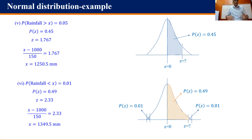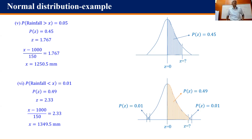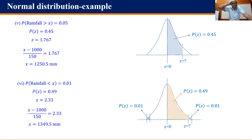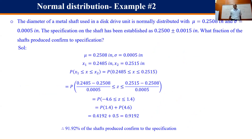Just for fun — an engineering example. The diameter of a metal shaft used in a disc drive unit is normally distributed with mean 0.2508 inch and σ = 0.0005 inch. The specification is 0.2500 ± 0.0015 inch. This comes from statistical quality control (SQC).